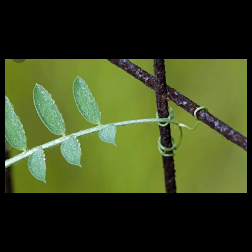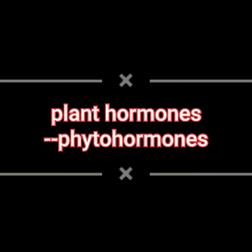Plants also have some hormones. Plant hormones are called phytohormones. Internally, growth and development in plants are controlled by hormones. Some hormones are growth promoters and some hormones are growth inhibitors.